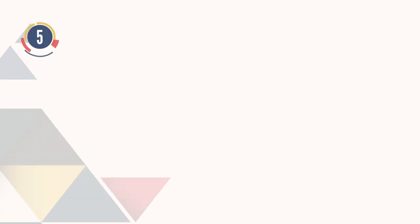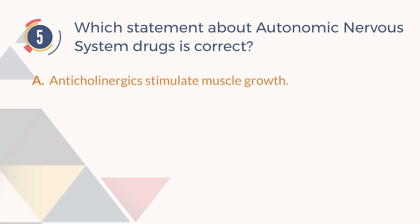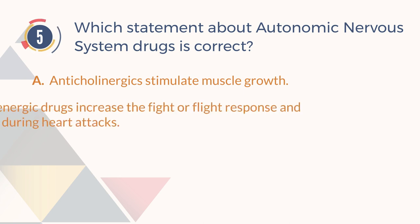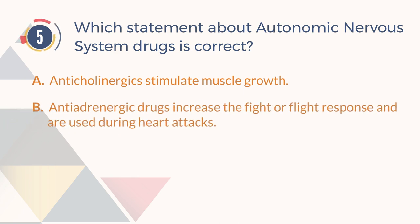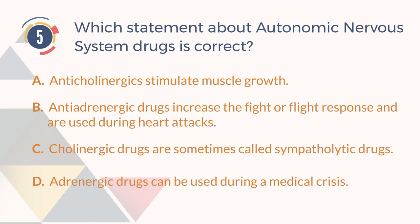Number 5. Which statement about autonomic nervous system drugs is correct? A. Anticholinergic drugs stimulate muscle growth. B. Antiadrenergic drugs increase the fight-or-flight response and are used during heart attacks. C. Cholinergic drugs are sometimes called sympatholytic drugs. D. Adrenergic drugs can be used during a medical crisis.